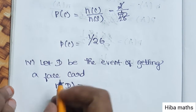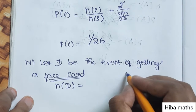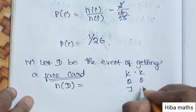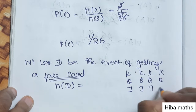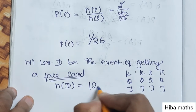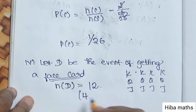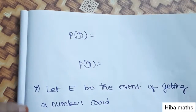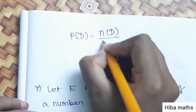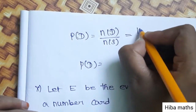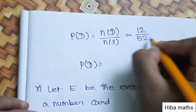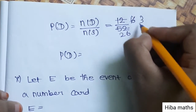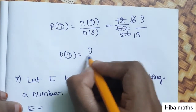Fourth subdivision: Let D be the event of getting a face card. Face cards are king, queen, and jack. Each of the 4 suits has 3 face cards, so 4 times 3 equals 12. N of D is 12. P of D equals N of D by N of S, that is 12 by 52, which simplifies to 3 by 13.